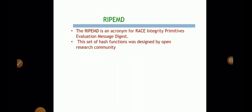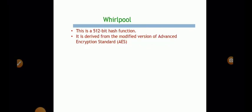And next is RIPEMD. It is an acronym of RACE, Integrity, Primitive, Evaluation, Message, Digest. So this set of hash functions is designed by the open research community. And the last one is the whirlpool algorithm which gives you 512 bits of hash function. It is derived from the modified version of advanced encryption standard AES.